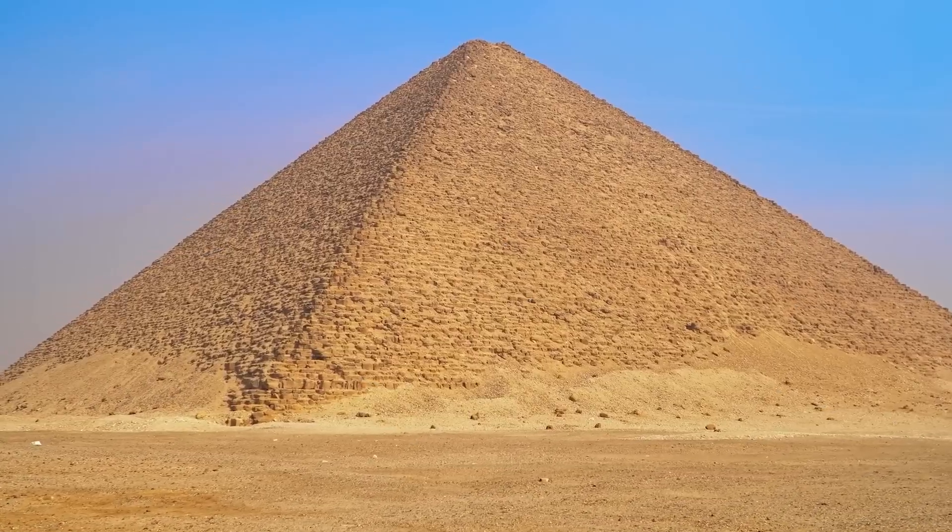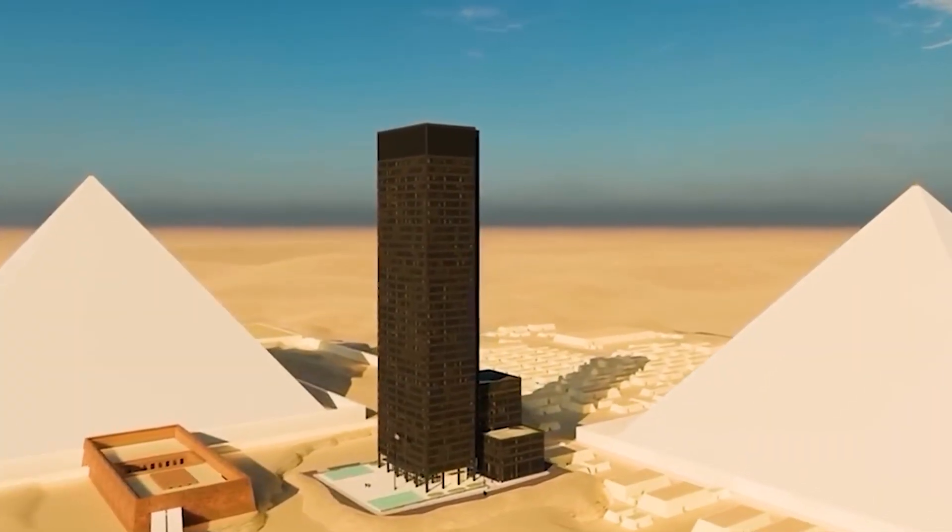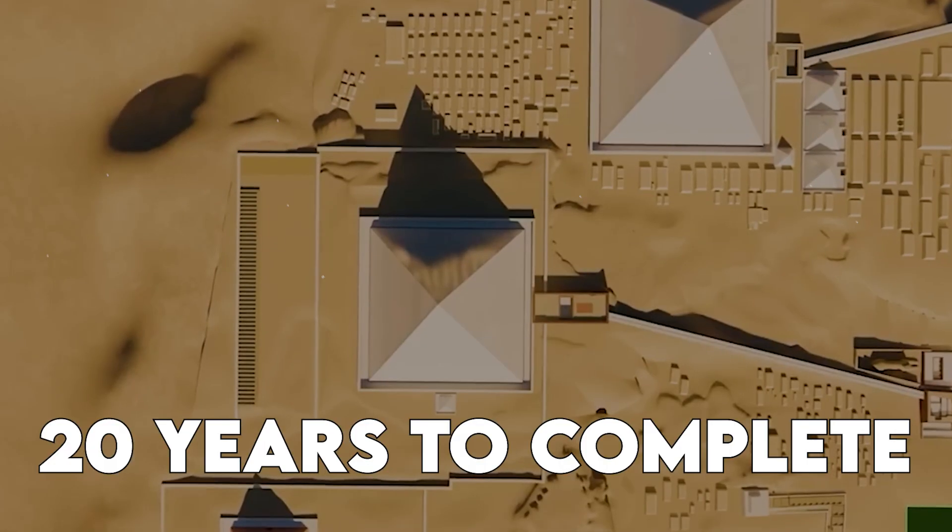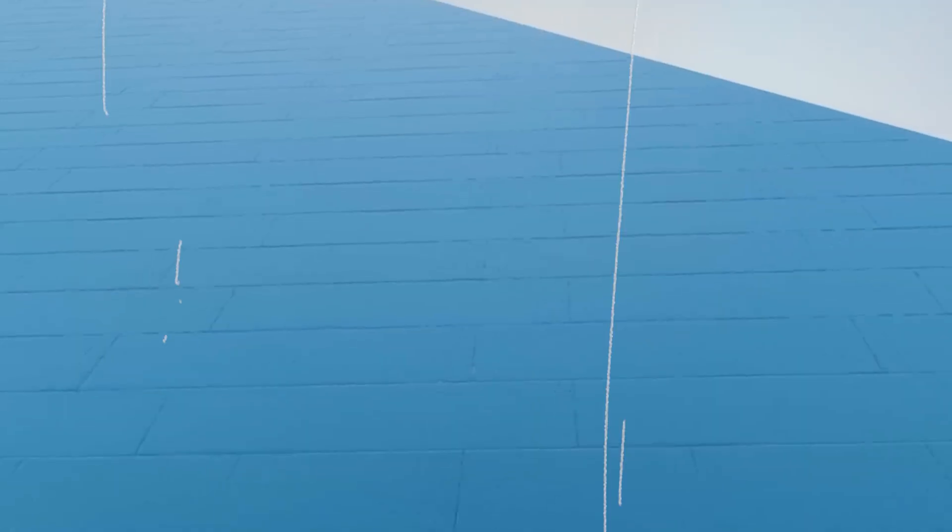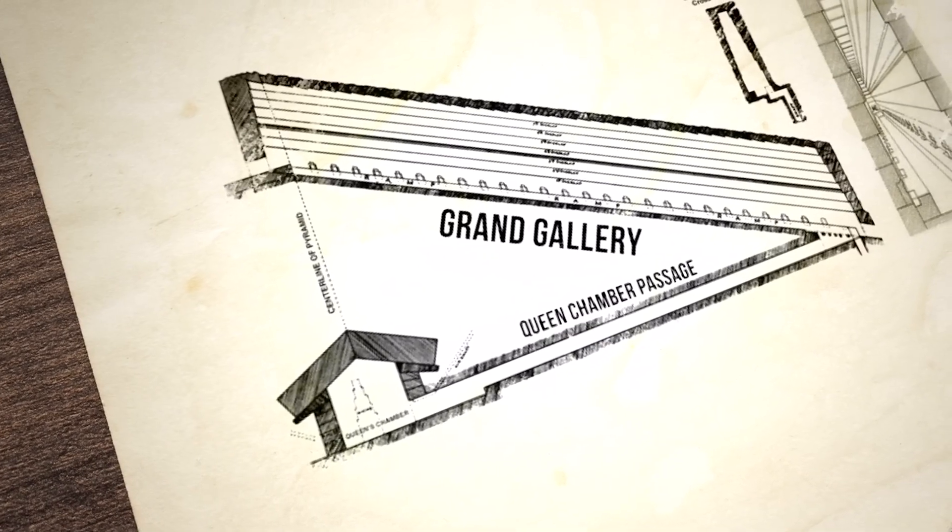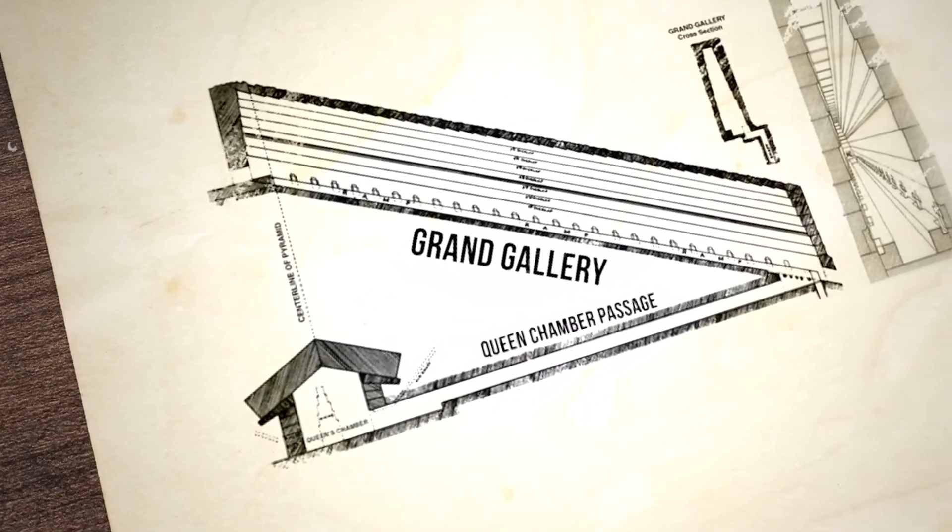The construction of the pyramids took decades. The Great Pyramid likely took around 20 years to complete. The workers were organized into crews with each crew responsible for a different part of the job, cutting stone, moving it, placing it, and so on.